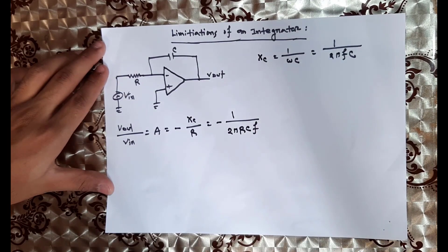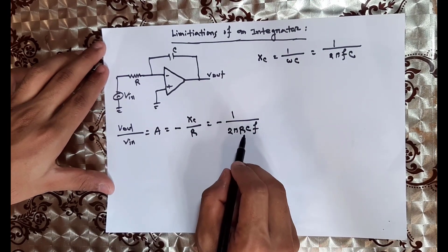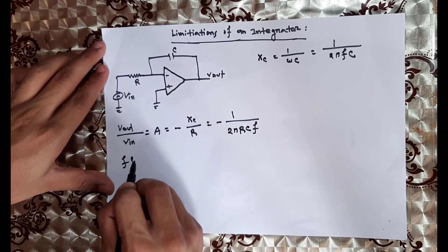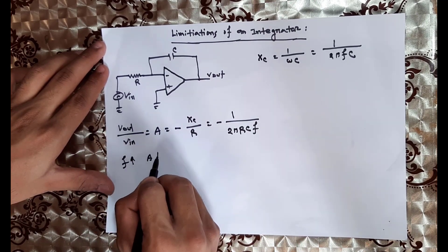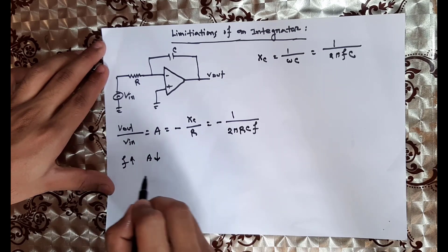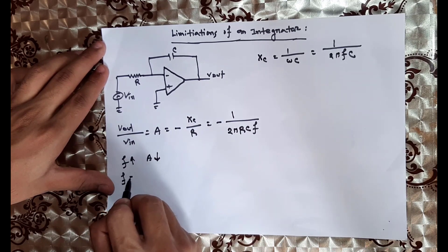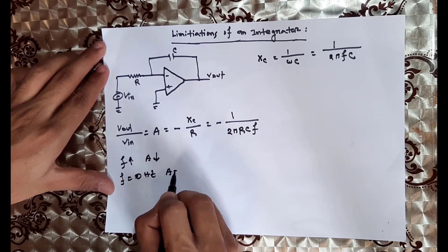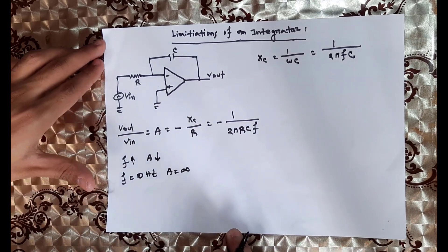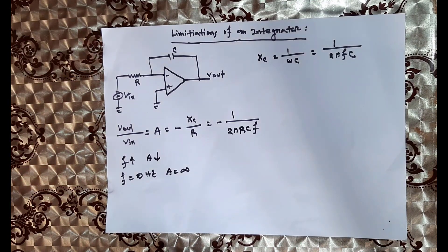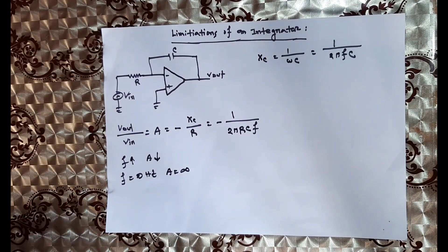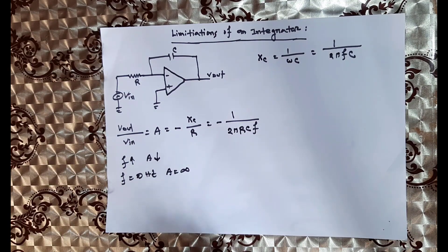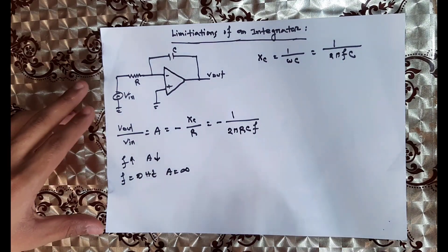Now, if we want to show how much the gain is. Let's look at this equation. The frequency response shows gain. When the frequency is 0 Hz, the gain is infinity. So we plot the frequency response of the ideal integrator. When the frequency is low, the gain is infinity.